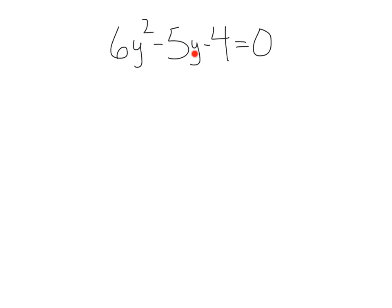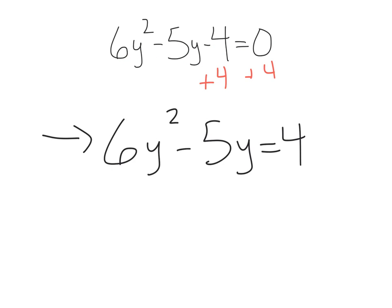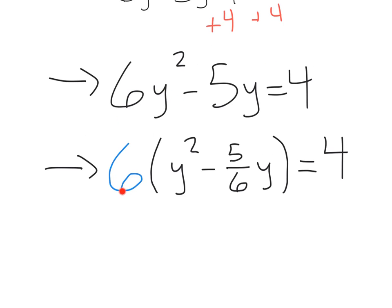Here, we've got 6y squared minus 5y minus 4 equals 0. Moving over that c constant term, we get 6y squared minus 5y equals 4. Now, let's make sure this y squared term has a coefficient of 1 by factoring out a 6. Doing that, we take the 6 out. That leaves us with y squared minus.